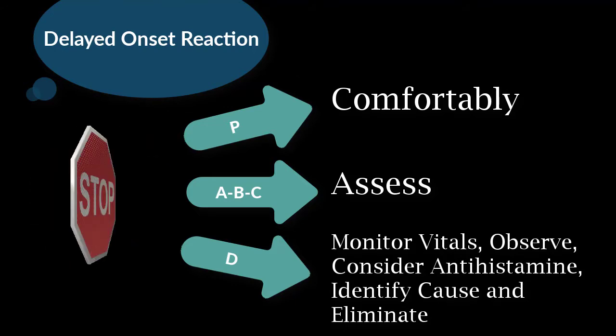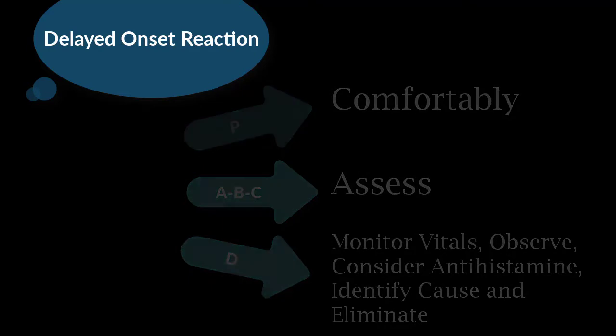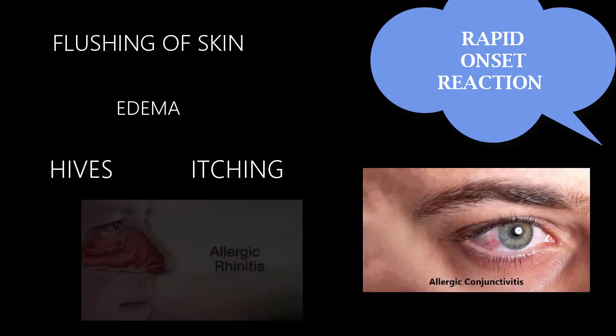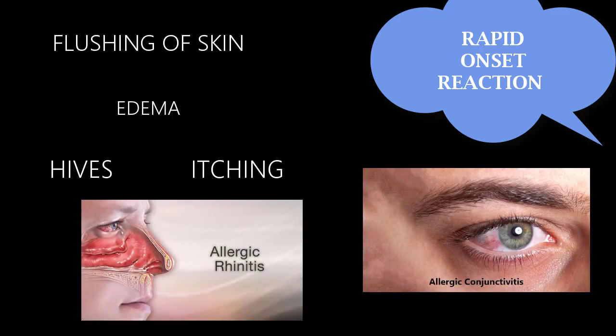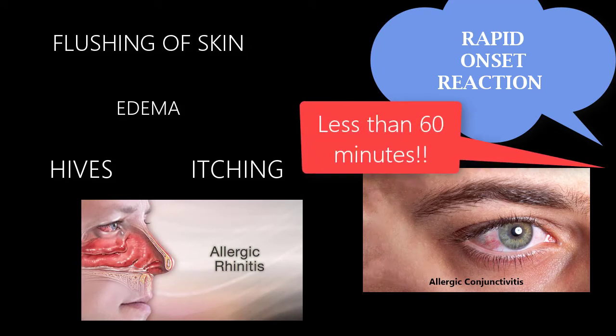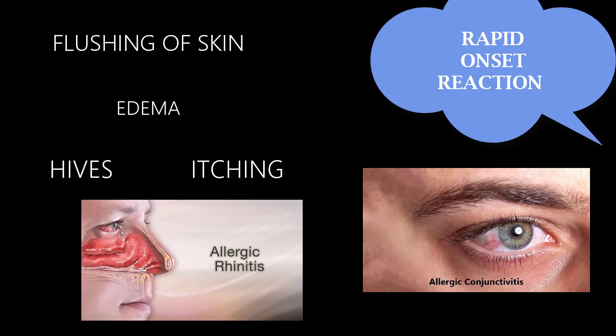We would like to identify the cause of the allergy and eliminate it from any future procedures. The patient would also need to be referred to his or her family physician for evaluation. With a rapid onset skin reaction, we would see the same cues — flushing of the skin, edema, hives, and itching — and it may include additional symptoms like conjunctivitis and rhinitis. Rapid onset reactions occur in less than 60 minutes from the time of exposure, and its symptoms should be managed more aggressively.